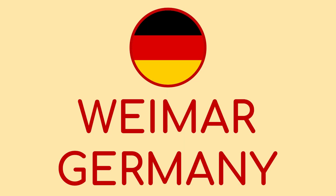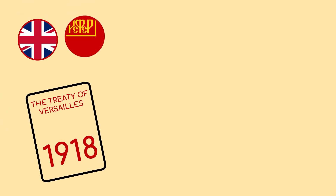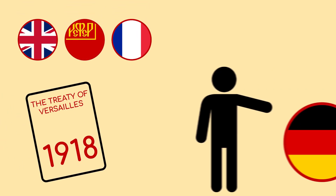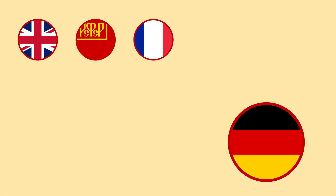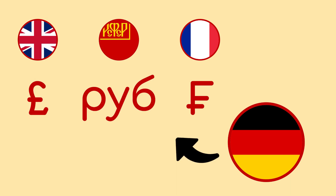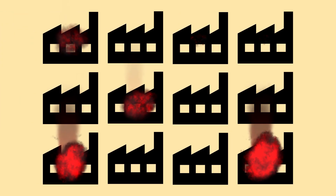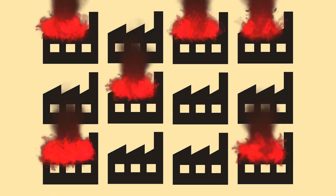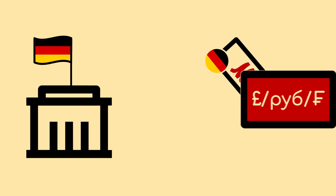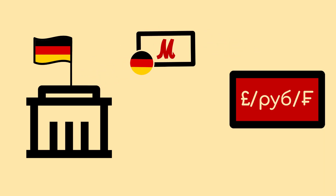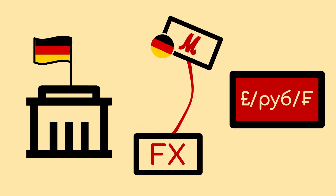Weimar Germany. At the end of the First World War, the UK, Russia and France ordered Germany to pay war reparations. These reparations were owed in the respective foreign currencies. After a devastating war, Germany suffered significantly reduced production capacity. This gave Germans a handicap in producing the funds required to pay this debt, and also put the value of the debt at the mercy of the foreign exchange rate.